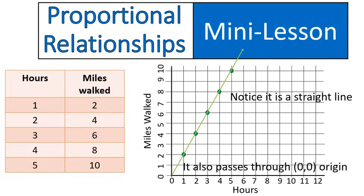The second thing is that it passes through the origin, 0, 0. That's important. So it has to pass through the origin, 0, 0, and be a straight line. It has to meet both of those requirements, and then it is a proportional relationship.